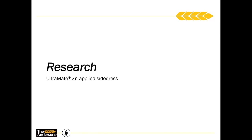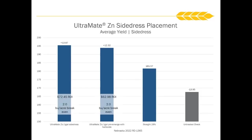Some research we've done on our Ultramate ZN — this was a Nebraska study from last year where we wanted to look at some different timings. We looked at a pre-emerge application with that herbicide — so that's the weed and feed — along with taking a look at that side dress application. Just like the Ultramate LQ, what we're seeing is that we're helping protect that nitrogen, especially from the volatilization side. And when we protect that nitrogen, especially late season, we're seeing an increase in our bushels.